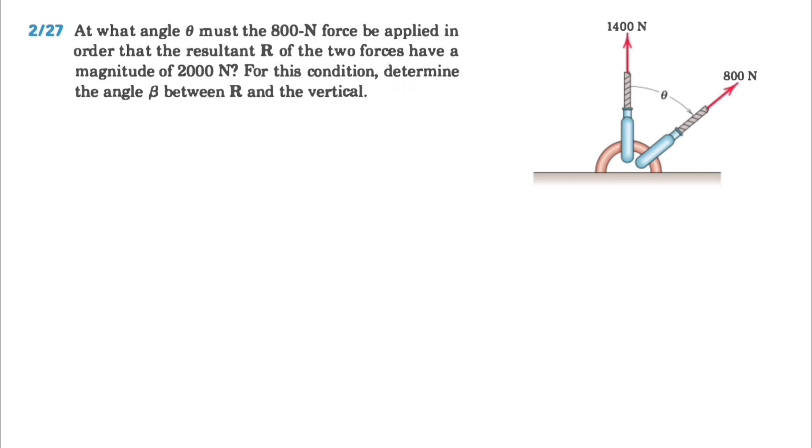The question is asking to find the angle theta that the 800N force must be applied in order to have the resultant of the two forces have a magnitude of 2000 newtons, and for this condition we need to determine the angle beta between R and the vertical.